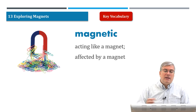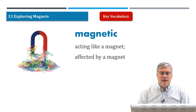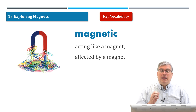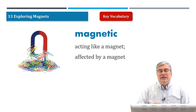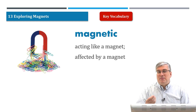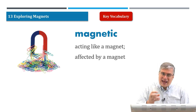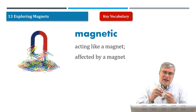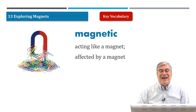Magnetic. Now we get into some words more specific to this lesson. Magnetic means acting like a magnet or affected by a magnet. Magnetic is kind of like a quality. If you say this metal is magnetic, it means that it acts like a magnet — it has those forces of attraction or repulsion.